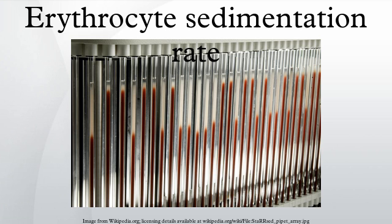There are three stages in erythrocyte sedimentation: Stage 1, rouleaux formation, first 10 minutes; Stage 2, a stage of sedimentation or settling, 40 minutes; Stage 3, a stage of packing, 10 minutes, where sedimentation slows and cells start to pack at the bottom of the tube. ESR is also a component of the PCDAI, an index for assessment of severity of inflammatory bowel disease in children.